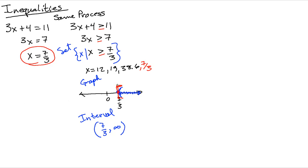When the inequality includes 7/3 (≥), the interval notation uses a bracket instead. Interval notation may not be required in this class, but in college algebra and pre-calculus it will often appear — it's a way of expressing the graph as something you can type.